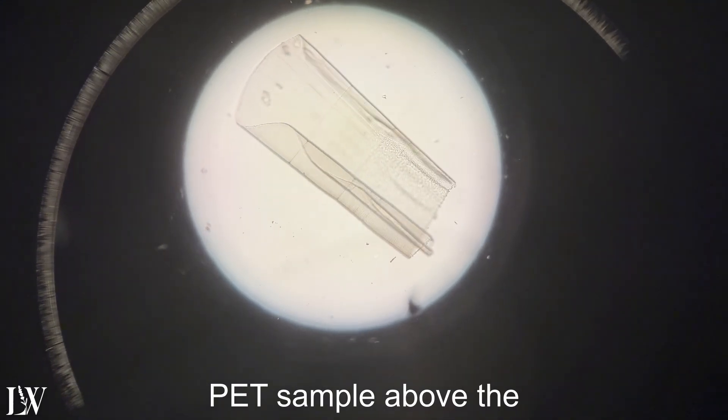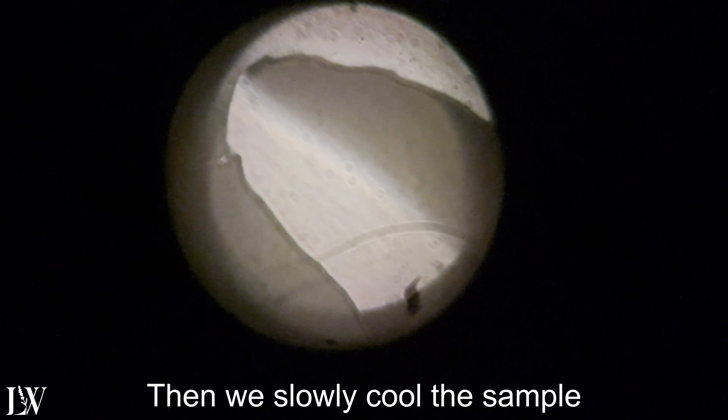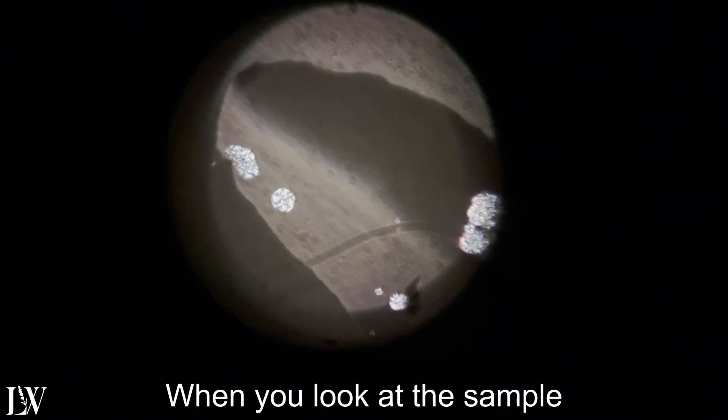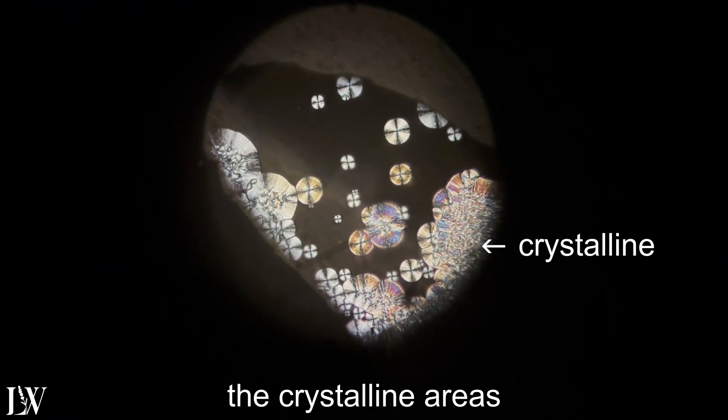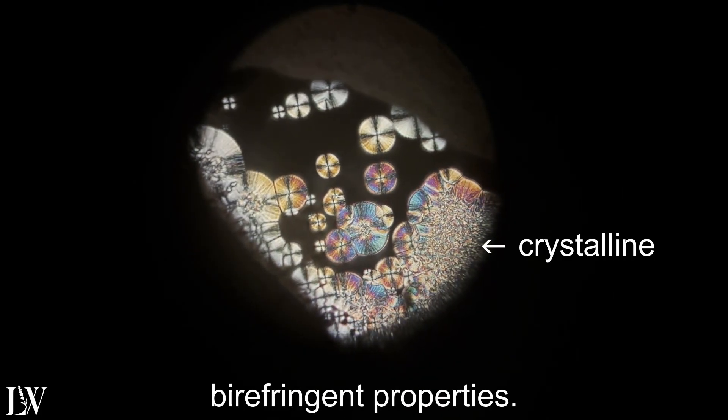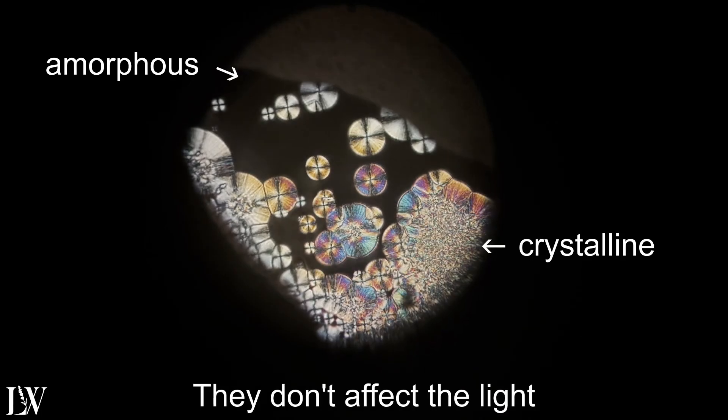Next, we heat up the PET sample above the PET's melting point to erase thermal history. Then we slowly cool the sample down to trigger crystallization. When you look at the sample with polarized light, the crystalline areas start to glisten due to their birefringent properties. The amorphous areas, in contrast, look dark. They don't affect the light because they're isotropic.